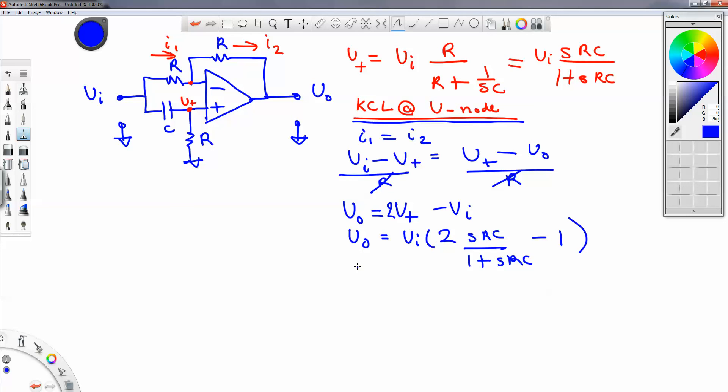So let's write our transfer function, let's define our transfer function as H(s) equal to Vout over Vin of s equal to 2SRC. And we want to combine the terms so that we have a single denominator. So we're just going to write this as 1 plus SRC over 1 plus SRC.